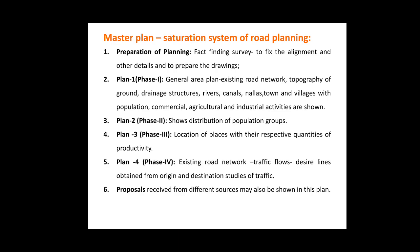Plan 4 or Phase 4 is the existing road network showing the traffic flows and desired lines obtained from the origin and destination studies of the traffic. The most common example of Plan 4 can be taken as Google Maps while using it to navigate roads, which actually shows the current situation of the traffic on the road. If the road is free for traffic movement it shows a green line, and if there is congestion or a traffic jam it shows a red line on the road.